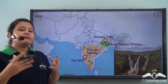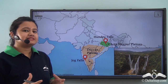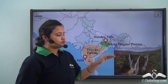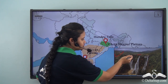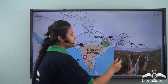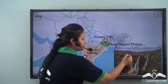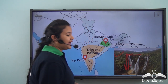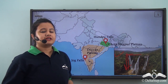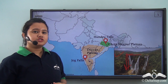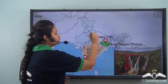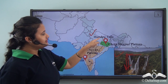Plateaus also offer mesmerizing sites of waterfalls. Because plateaus have a flat top with steep edges, swift-flowing rivers fall down from a great height, leading to the formation of various waterfalls. Some of the famous waterfalls in India include Hundra Falls, located in the Chota Nagpur region.